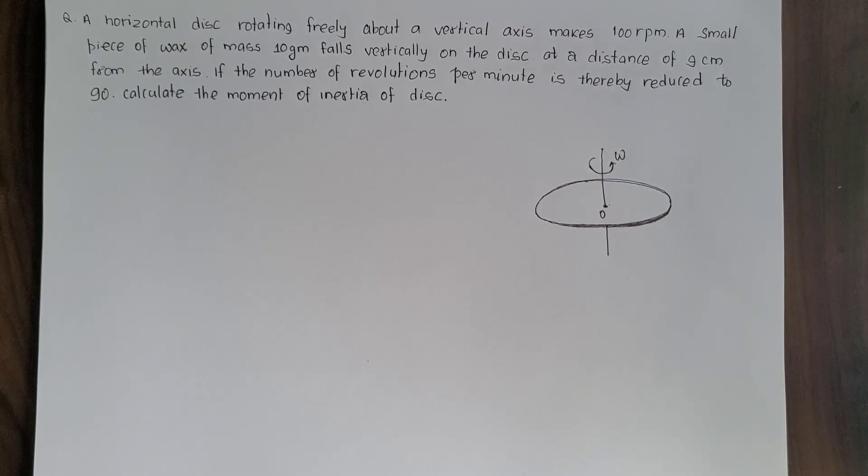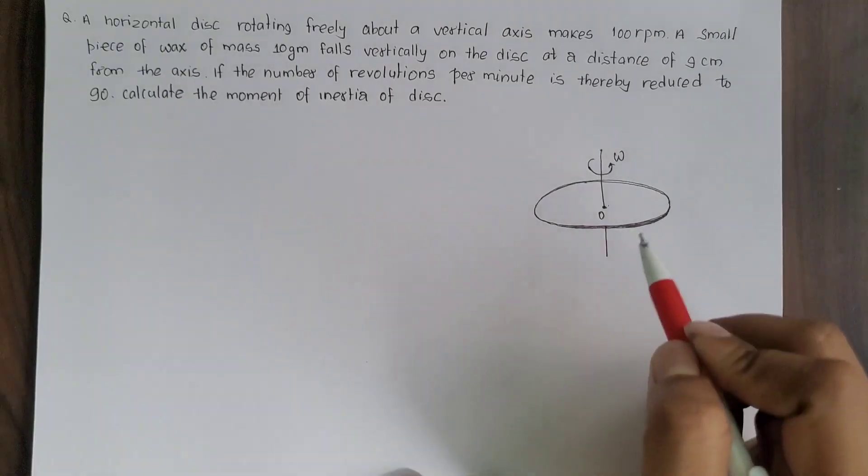Class 12 Physics Rotational Dynamics word problem. A horizontal disc rotating freely about a vertical axis makes 100 revolutions per minute. A small piece of wax of mass 10 gram falls vertically on the disc at a distance of 9 cm from the axis. If the number of revolutions per minute is thereby reduced to 90, calculate the moment of inertia of the disc.